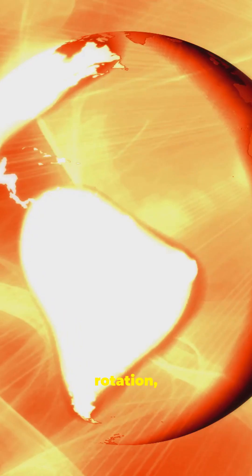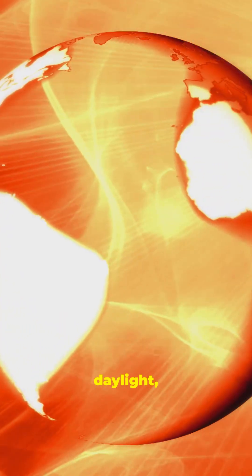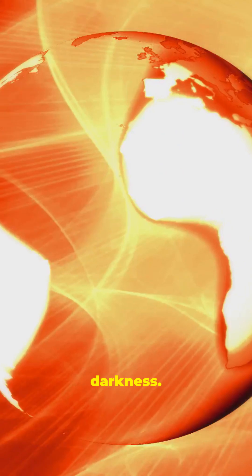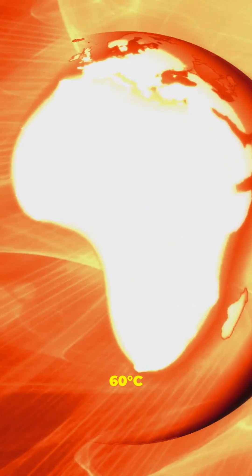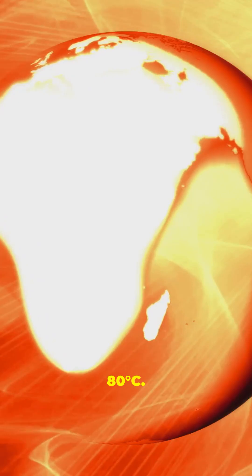With no rotation, one side faces unending daylight, the other eternal darkness. Temperatures would swing wildly, from scorching 60 degrees Celsius to freezing negative 80 degrees Celsius.